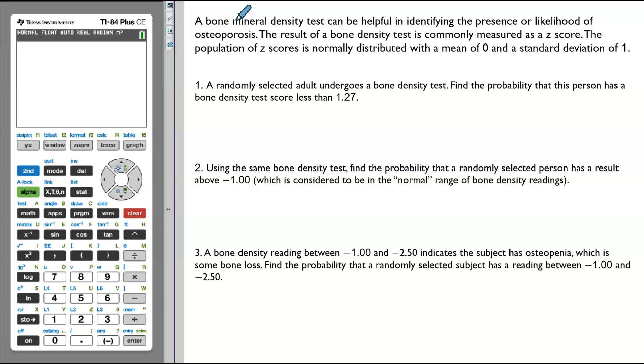Let's just read the example one more time. A bone mineral density test can be helpful in identifying the presence or likelihood of osteoporosis. The result of a bone density test is commonly measured as a z-score. The population of z-scores is normally distributed with the mean of 0 and a standard deviation of 1. So, these results meet the requirements of a standard normal distribution.